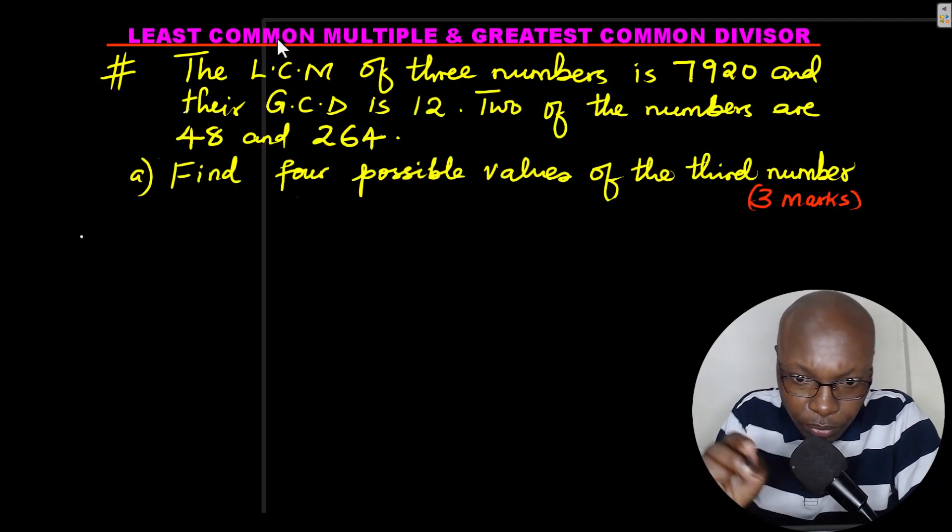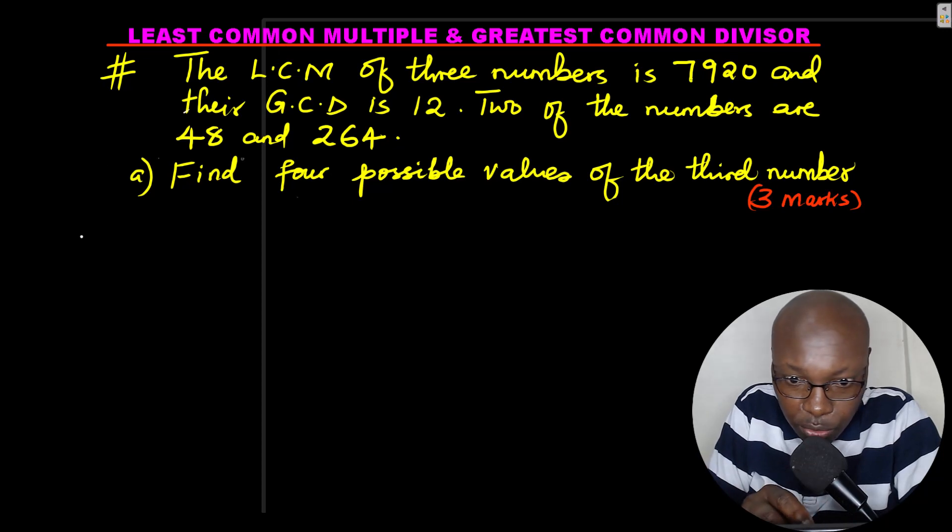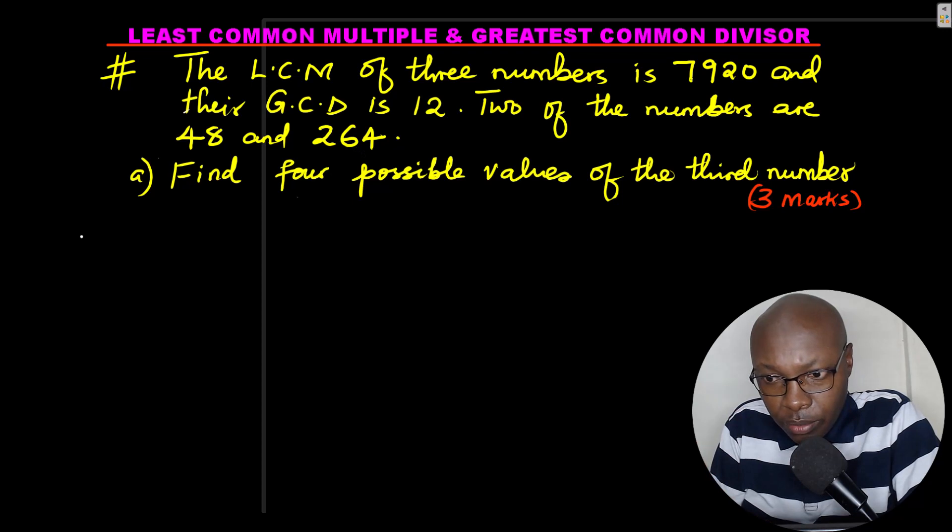So let's go to the first part. You're supposed to find the four possible values of the third number. You're given the two numbers which are 48 and 264. Then you're given the LCM is 7920 and the GCD is 12.